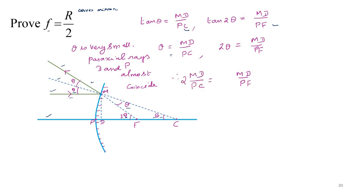So 2 times MD by PC equal to MD by PF. 2 times MD by PC means 2 theta. But that is also equal to MD by PF.